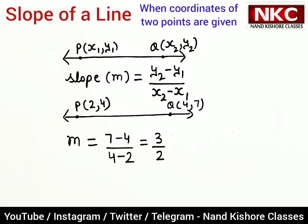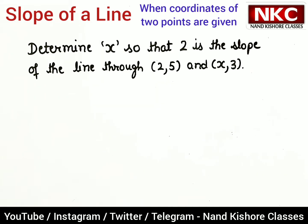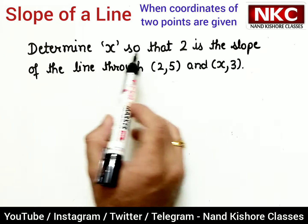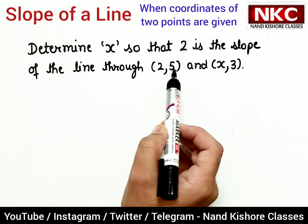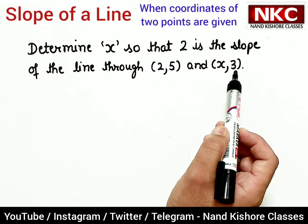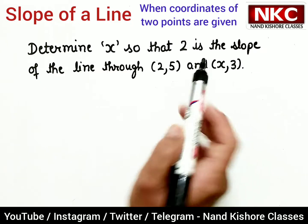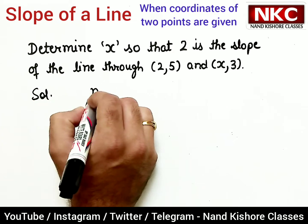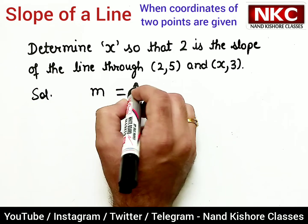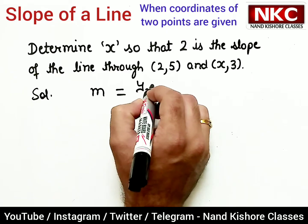Now we are going to do one question based upon this concept. Look at this question: determine x so that 2 is the slope of the line through (2,5) and (x,3). Now let's have a look. Slope, which is denoted by m, is given by formula y2 minus y1 over x2 minus x1.